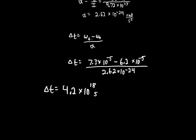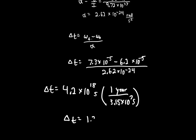That's an incomprehensible number of seconds. Converting to years using 1 year equals 3.15 times 10 to the 7 seconds, we find the change in time is about 1.3 times 10 to the 11 years. So we don't need to worry about this happening anytime soon.